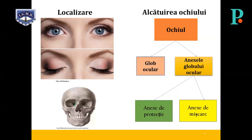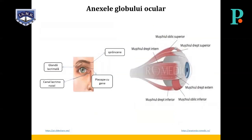Localizare: ochiul este un organ pereche, situat în orbite, acestea fiind cavități osoase ale viscerocraniulului. Alcătuirea ochiului: ochiul este format din glob ocular și anexele globului ocular, care pot fi anexe de protecție și anexe de mișcare. Organele anexe ale globului ocular sunt organe de protecție — sprâncene, pleoape, glande lacrimale, conjunctiva — și organe de mișcare.